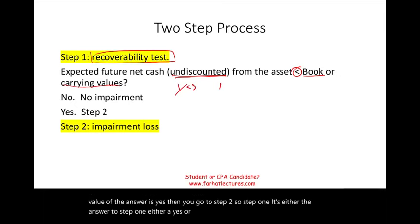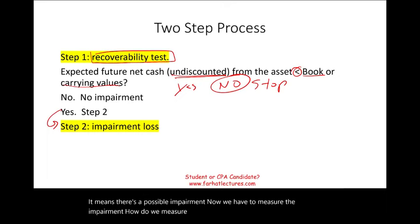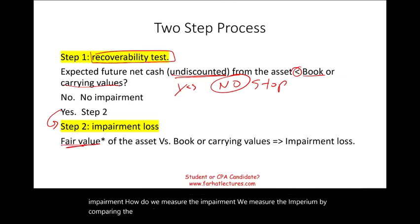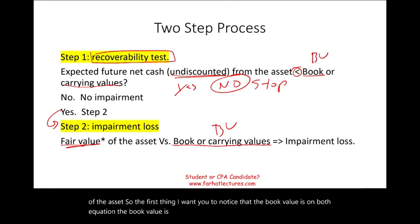If the answer to step one is no — meaning the expected future cash flow is greater than the book value — we stop. If the answer is yes — there's a possible impairment — we move to step two to measure the impairment by comparing the fair value of the asset to its book value.